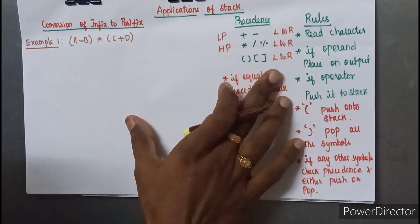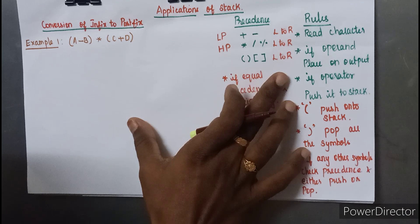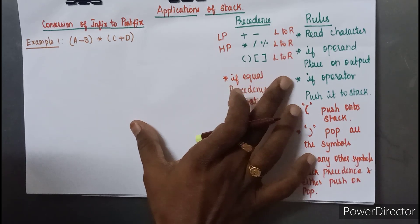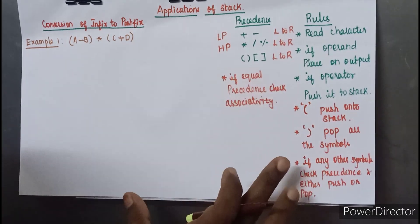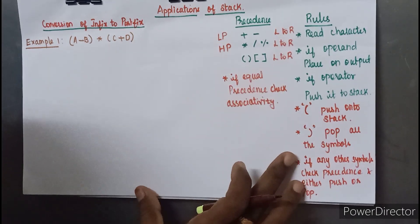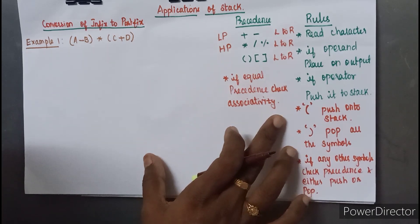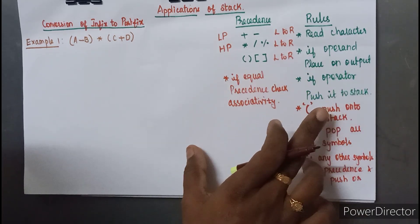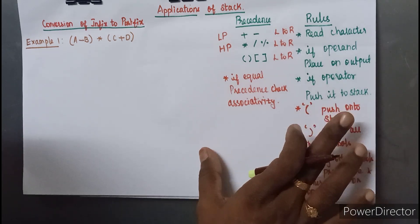First, we have to read the character from the input stream one after the other. According to the character, if it is an operand we have to follow one step, and if it is an operator we have to follow another step. If the character encountered is an operand it should be placed on the output, and if the character is an operator it should be pushed onto the stack.